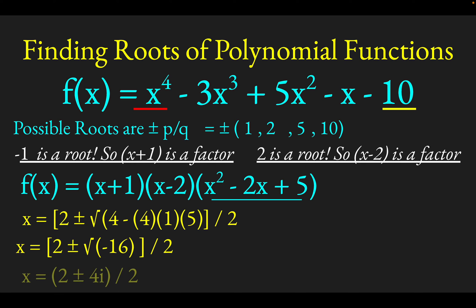So we're going to get complex roots here, two complex roots. 2 plus or minus 4i over 2. And if you divide both of those terms by 2 to simplify, you'll get 1 plus or minus 2i. So these are your other two roots.